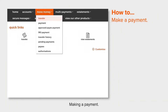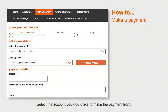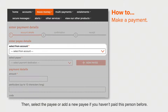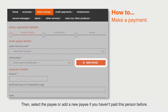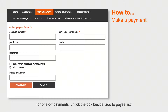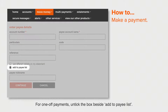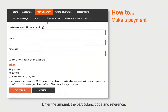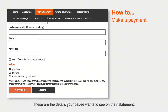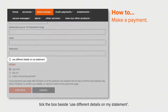Making a payment: select the account you'd like to make the payment from, then select the payee or add a new payee if you haven't paid this person before. For one-off payments, untick the box beside add to payee list. Enter the amount, the particulars, code and reference — these are the details your payee wants to see on their statement.